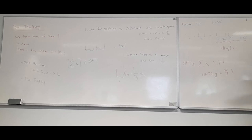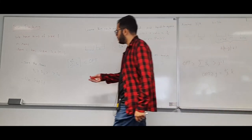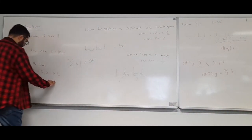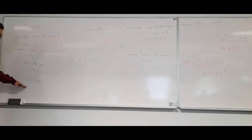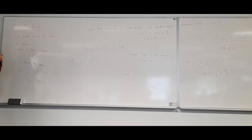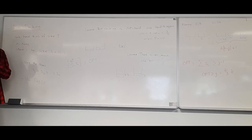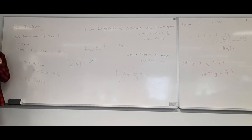In both cases we get a 3/2 approximation ratio. So sorting items by size (largest first) and then using first-fit gives the best possible approximation ratio. We know that any ratio better than 3/2 is NP-hard to achieve.